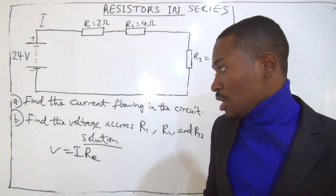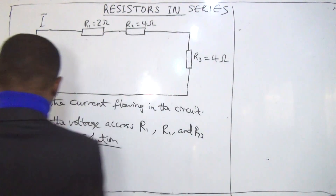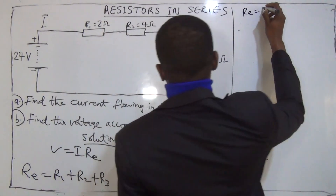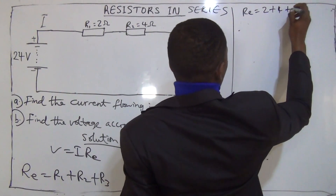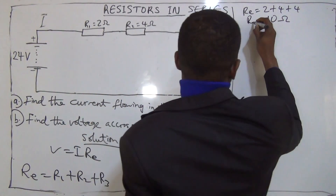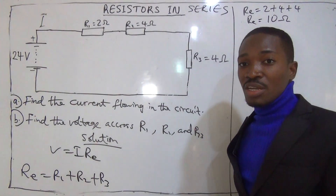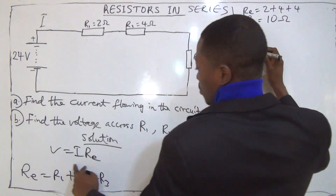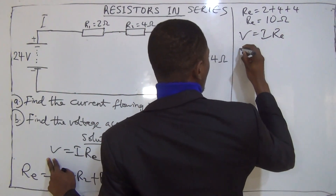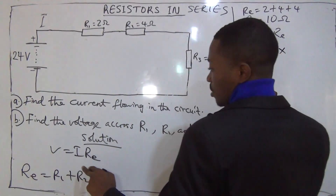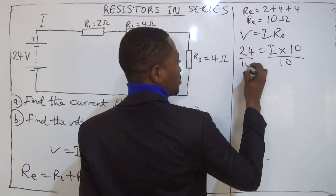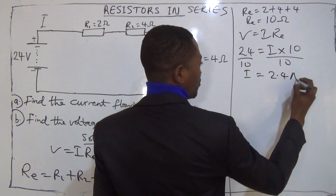For resistors connected in series, the effective resistance is the sum of each resistor. So effective resistance equals R1 plus R2 plus R3, which is 2 plus 4 plus 4, giving us 10 ohms. Therefore I equals 24 divided by 10, which gives 2.4 amperes.